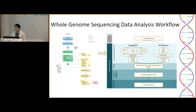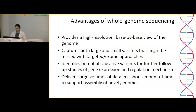In whole genome sequencing, two parallel analyses occur: genotype-driven and phenotype-driven. Once variants are accumulated, the causative variant is identified as per the disease. Advantages include high-resolution base-by-base view, capturing both large and small variants that might be missed with targeted and exome approaches, identifying potentially causative variants for further follow-up, and assembly of novel genomes.